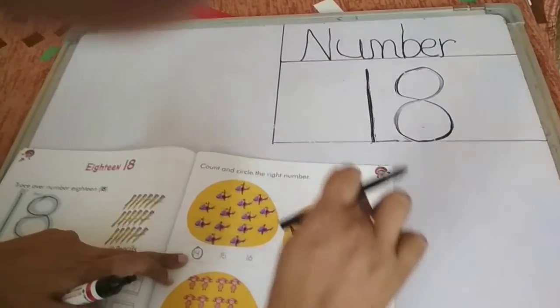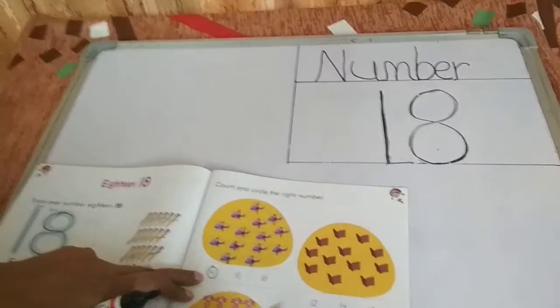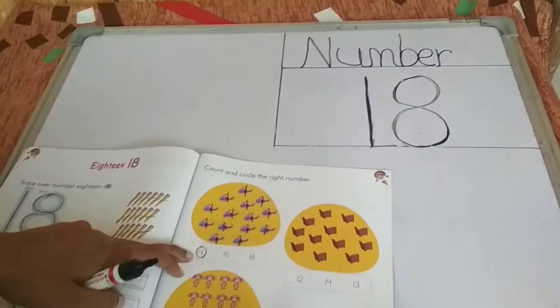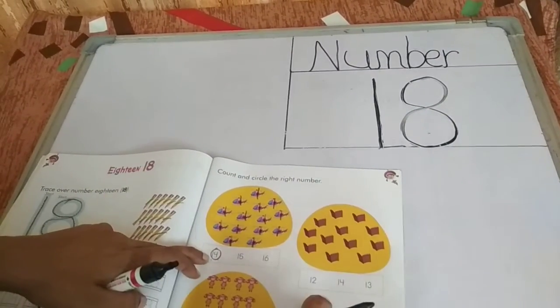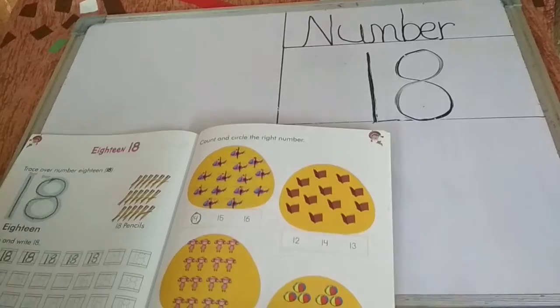So children, you have to just cut and count all these three. And find the correct number and circle this correct number. This is your worksheet.